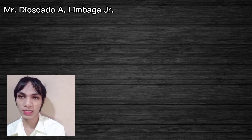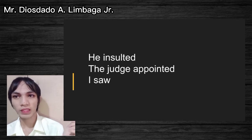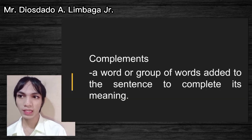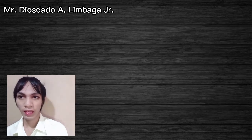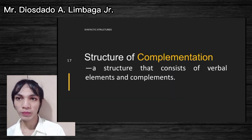That's it for the structure of coordination. I hope you have learned something. The next type of syntactic structure is the structure of complementation. Look at these following sentences — you can observe that they have incomplete thought. What are they lacking? They don't have complements. A complement is a word or group of words added to a sentence to complete its meaning. Now, look at the sentences when we add complements — they now show complete thought. Structure of complementation is a structure that consists of verbal elements and complements.